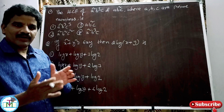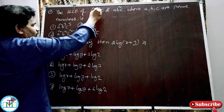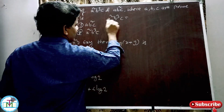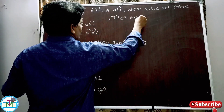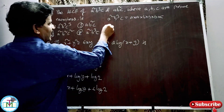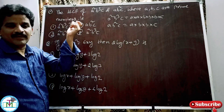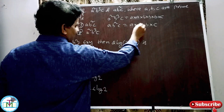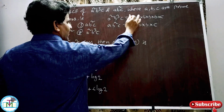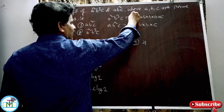Whenever we have to find HCF or LCM, we use prime factorization. The first number A²B³C = A×A × B×B×B × C. The second number AB²C = A × B×B × C. For HCF, we take the highest common factor: A is common — in the first number we have A², but in the second only A, so the common is A.